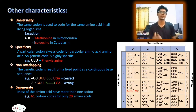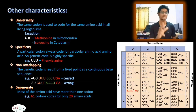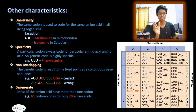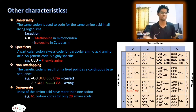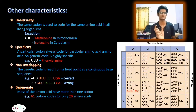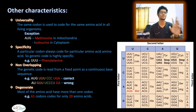The second characteristic is specificity. A particular codon always codes for a particular amino acid. Genetic codes are highly specific — a given codon will only code for one specific amino acid and not another.